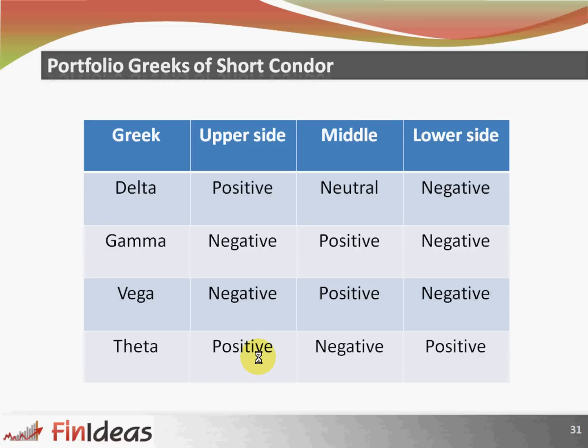Portfolio Greeks summary for short condor: Vega is negative on the upper side, positive towards the middle level, and again negative towards the lower side. Theta is positive on the upper side, negative on the middle level, and again positive towards the lower side.